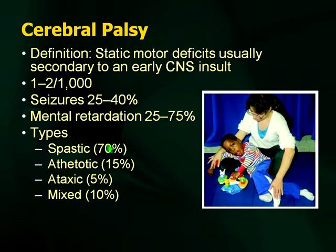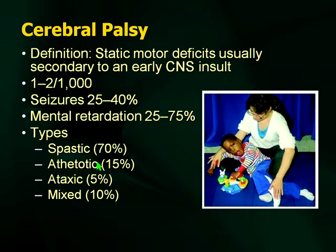There are multiple types of CP depending on the type of insult at birth. The most common types you'll see are spastic quadriparesis or spastic paraparesis, constituting 70 percent of kids. Athetotic CP is less common — remember that the athetosis occurs likely secondary to an insult to the basal ganglia, so these are kids who've had a hypoxic insult at birth with bilateral basal ganglia involvement.